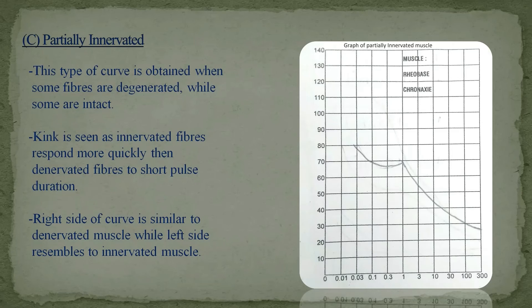The graph of a partially innervated muscle indicates that some fibers are degenerated while some are intact. For longer pulse durations, both innervated and denervated fibers respond with low intensity. For shorter pulse durations, innervated fibers respond relatively rapidly. For very short pulse durations, only innervated fibers respond at higher intensity while denervated fibers do not respond, creating a kink where the two parts meet. The right-hand part of the curve is similar to innervated muscle and the left-hand part is similar to denervated muscle; the shape indicates the proportion of denervation.